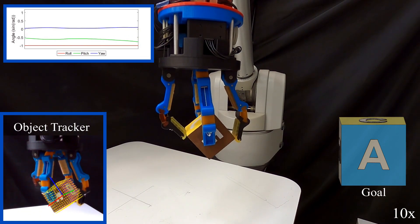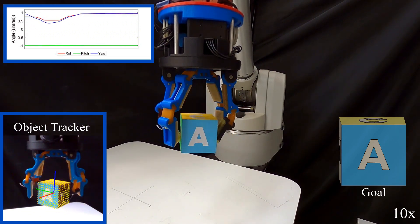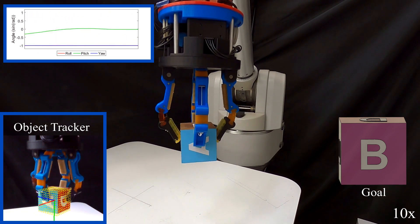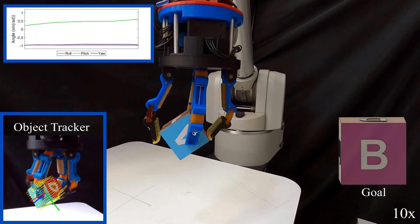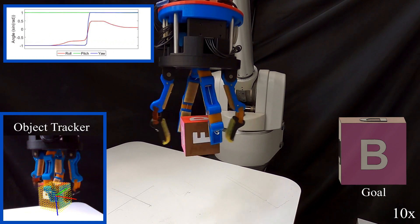The robustness of our method is further underscored by completing a long trajectory of goals. Here, the task is to reach cube faces A, B, C, D, E, and then F once again, all within the same sequence.